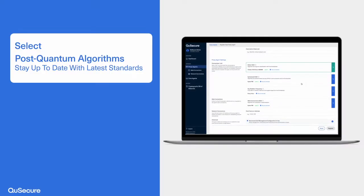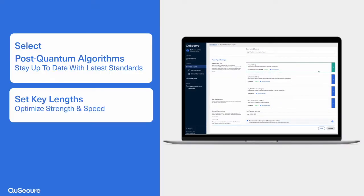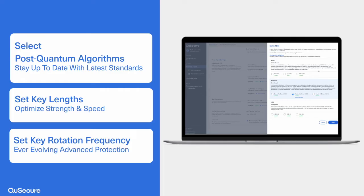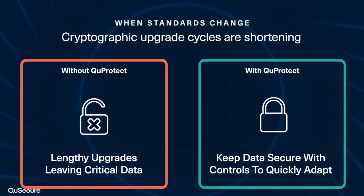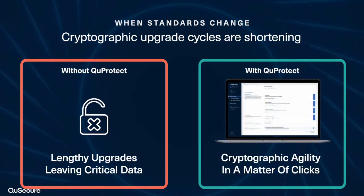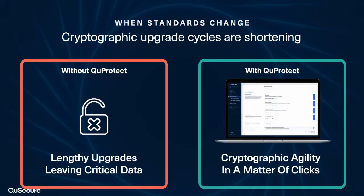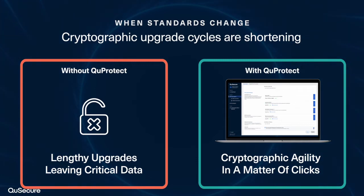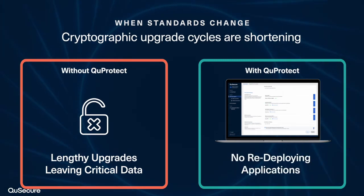Choose from the latest NIST algorithms, set key lengths, define key rotation frequency, and even change out the algorithm implementations. Administrators can revisit these controls and, in a matter of clicks, exercise cryptographic agility, deploying the latest protections instantly — no downtime, no redeploying applications.